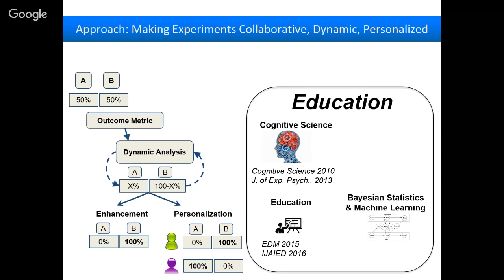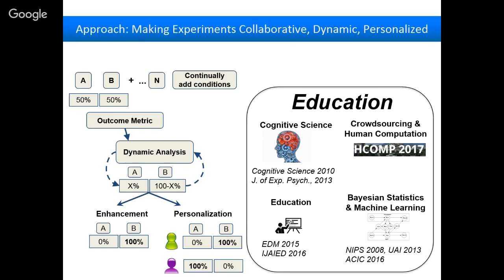In my PhD I applied agent statistics and reinforcement learning to modeling cognition, but now I apply them to building adaptive systems. If we truly want perpetually improving systems, we can't just have a fixed number of conditions — we've got to build software so we can keep adding new conditions every time we get a new idea or learn something from data. I draw on methods from human-computer interaction and crowdsourcing, where students and teachers can help design experiments and keep adding new conditions.